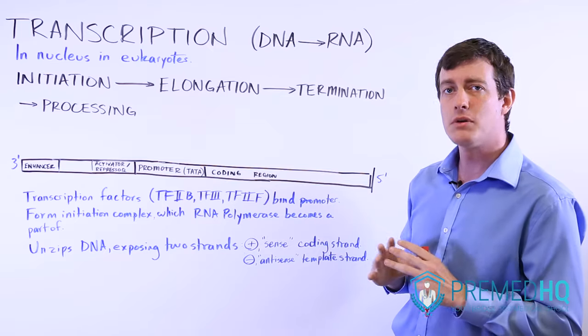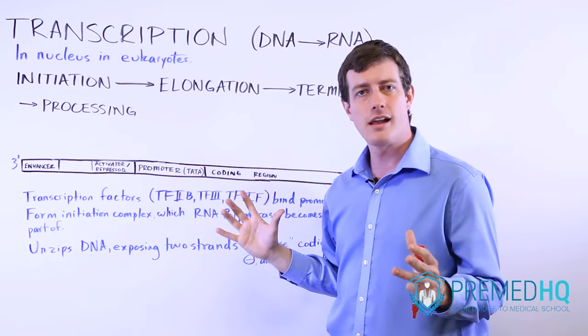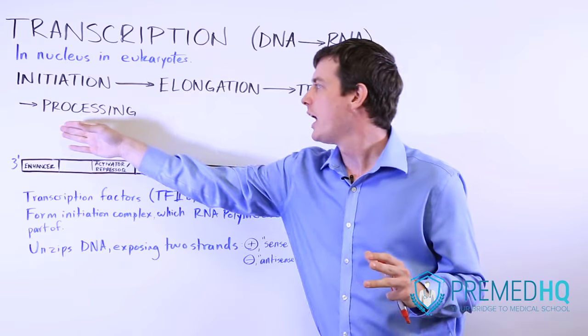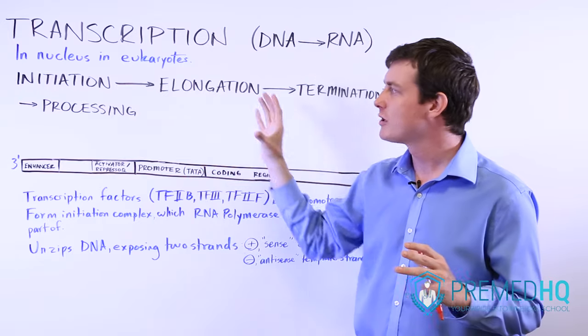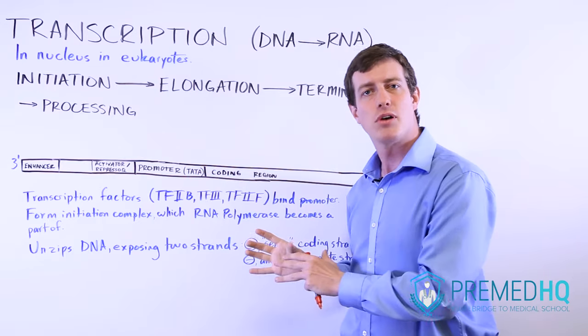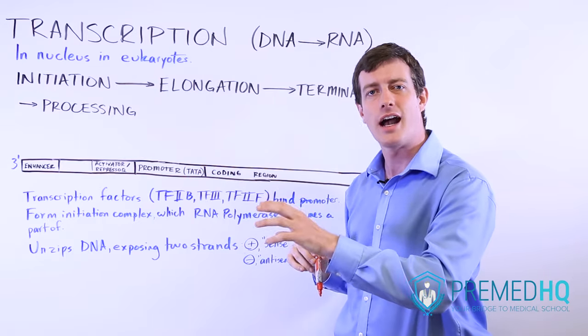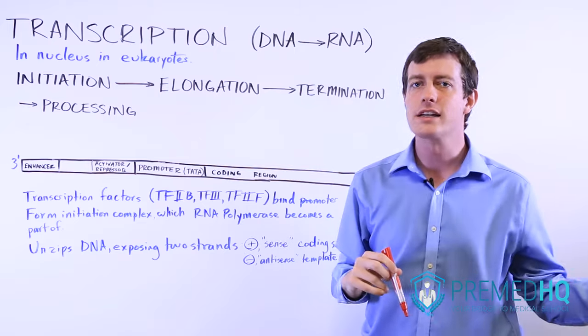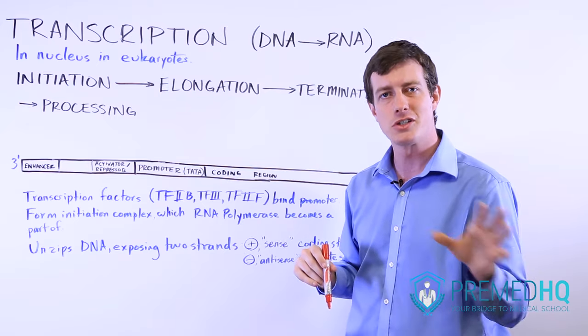With RNA, remember that you're generating a pre-mRNA and eventually you will have to process that. So for transcription we can add the processing step as something that needs to happen before we move on to the next phase of the central dogma, which is translation.